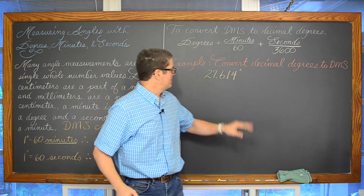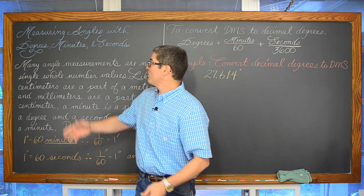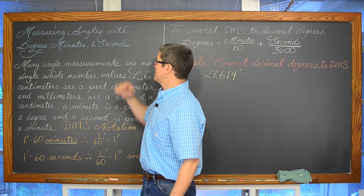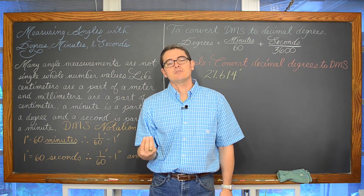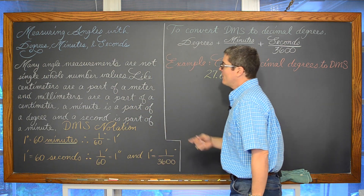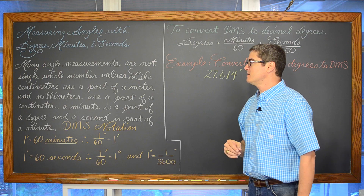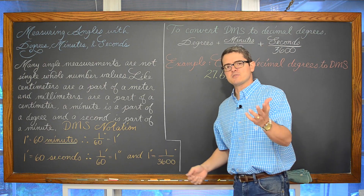Instead of having the part of an angle as a decimal, we will break it down by minutes and seconds. We have to know how to deal with that. Many angle measurements are not single whole number values.